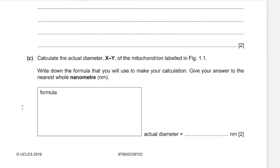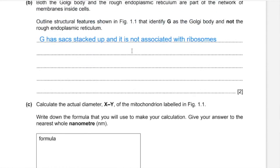Part C. Calculate the actual diameter X, Y of the mitochondria labeled in figure 1.1. Write down the formula that you'll use to make your calculation and give your answer to the nearest whole nanometer. The formula you'd use is: actual size equals image size over magnification.